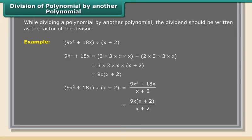The (x plus 2) terms cancel, giving us 9x. Therefore, 9x squared plus 18x divided by x plus 2 is equal to 9x.